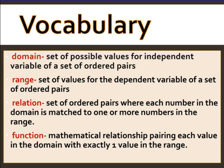Let's go through some vocabulary words. The first one is domain. Domain is just a set of possible values for the independent variable of a set of ordered pairs. In other words, this is really dealing with your x-coordinate.